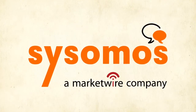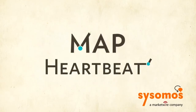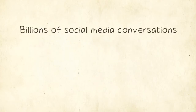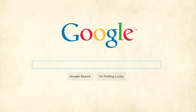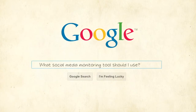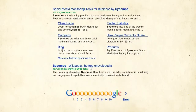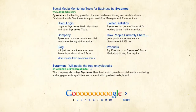How can we use Sysimos Map and Heartbeat to search through billions of social media conversations and only find the ones that are relevant to us? With Google searches, people are typically looking for the answer to a question. Most of the time, that answer is found in the first few results, which is why most people never need to scroll past the first page.